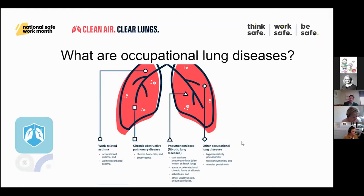But there are also other forms of occupational lung diseases present in Australia — hypersensitive pneumonitis, toxic pneumonitis, alveolar proteinosis. What's also not on this slide are some of the cancers. We're well aware of mesothelioma, for example, that's associated with asbestos inhalation, but also infectious diseases like COVID-19 and Q fever, which is also a feature of this campaign.